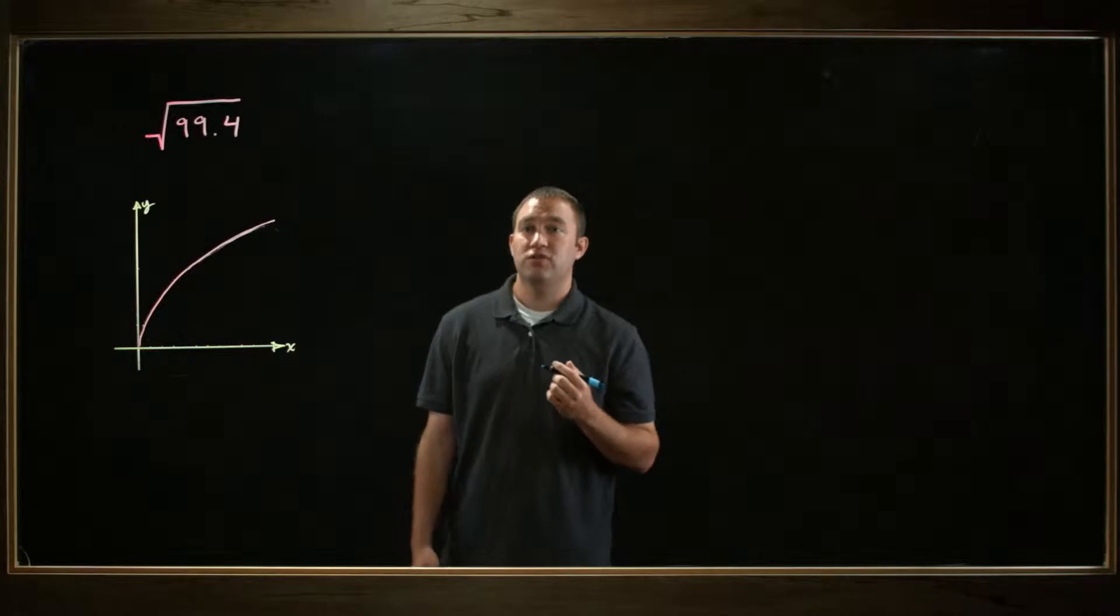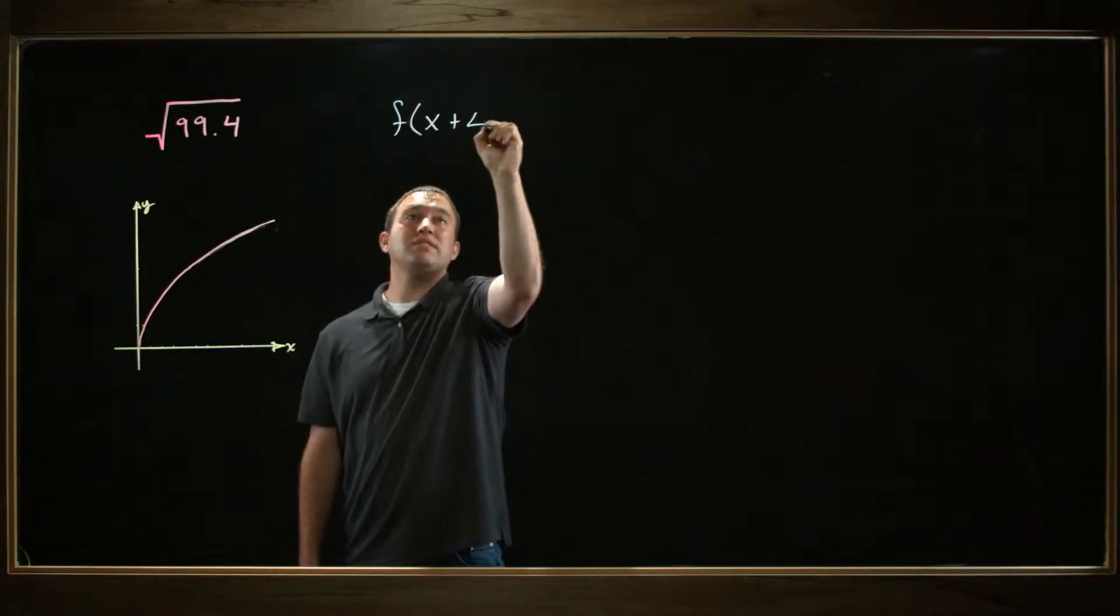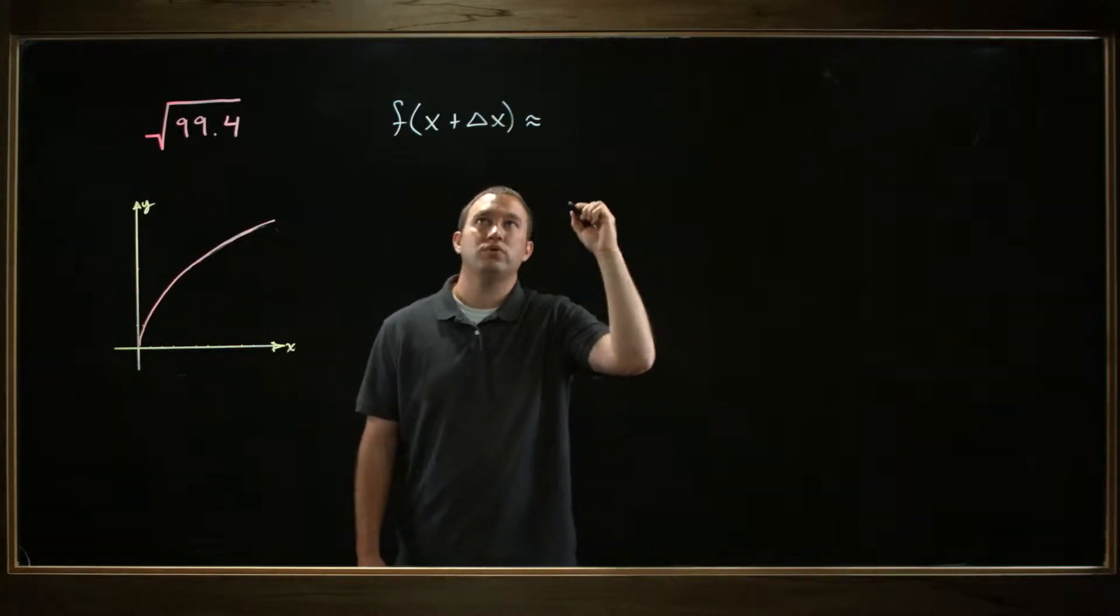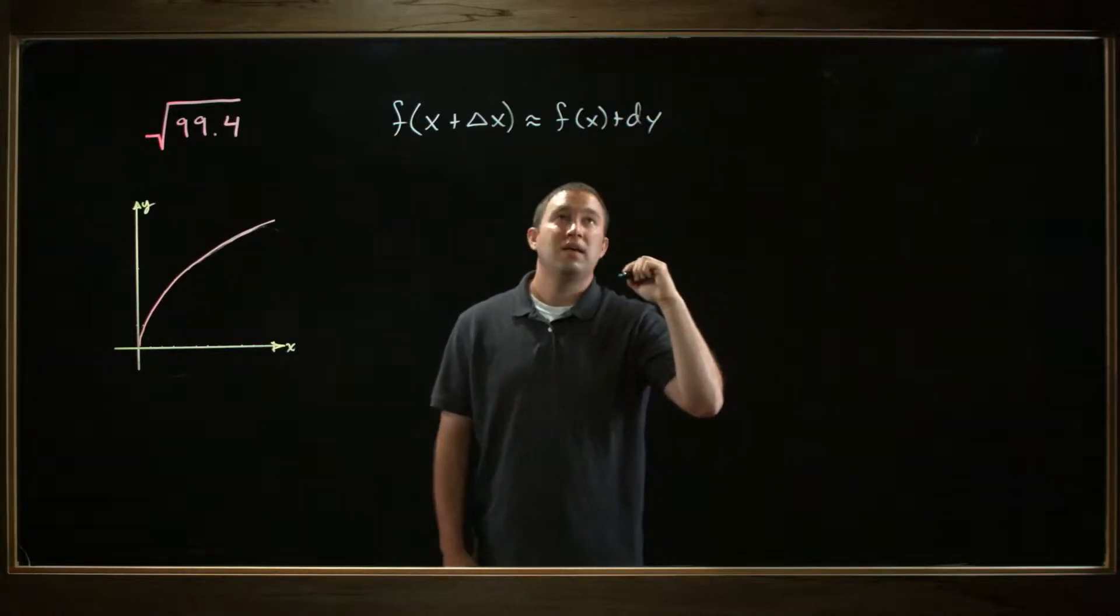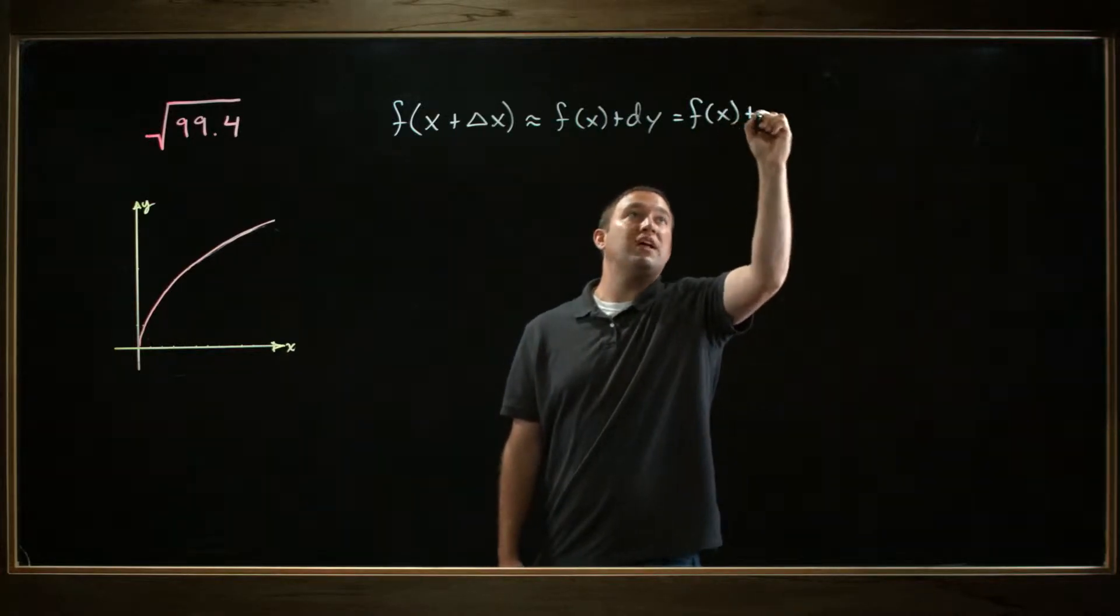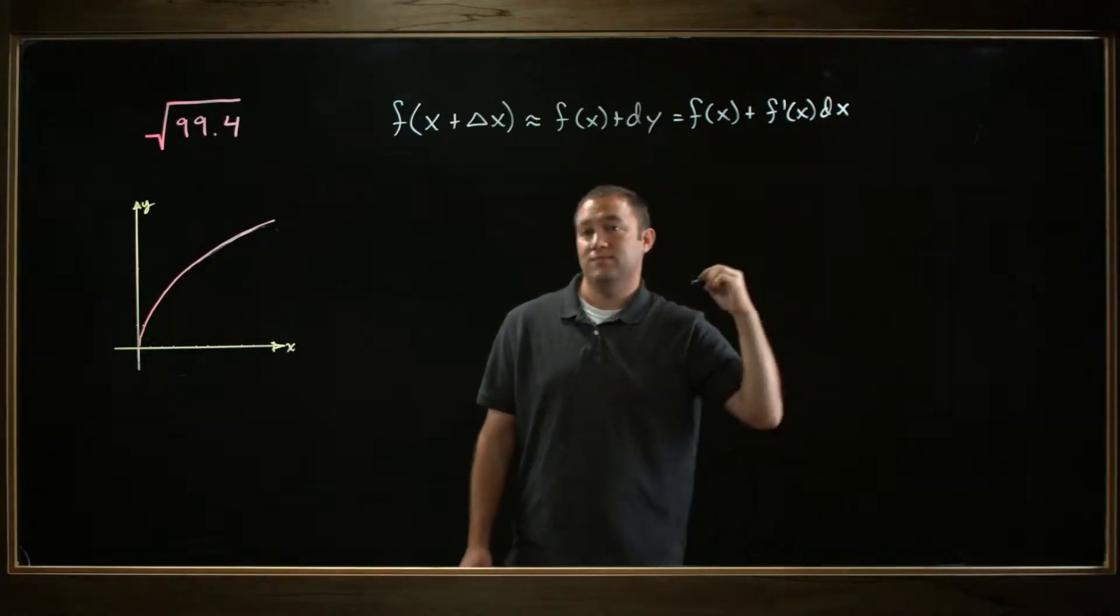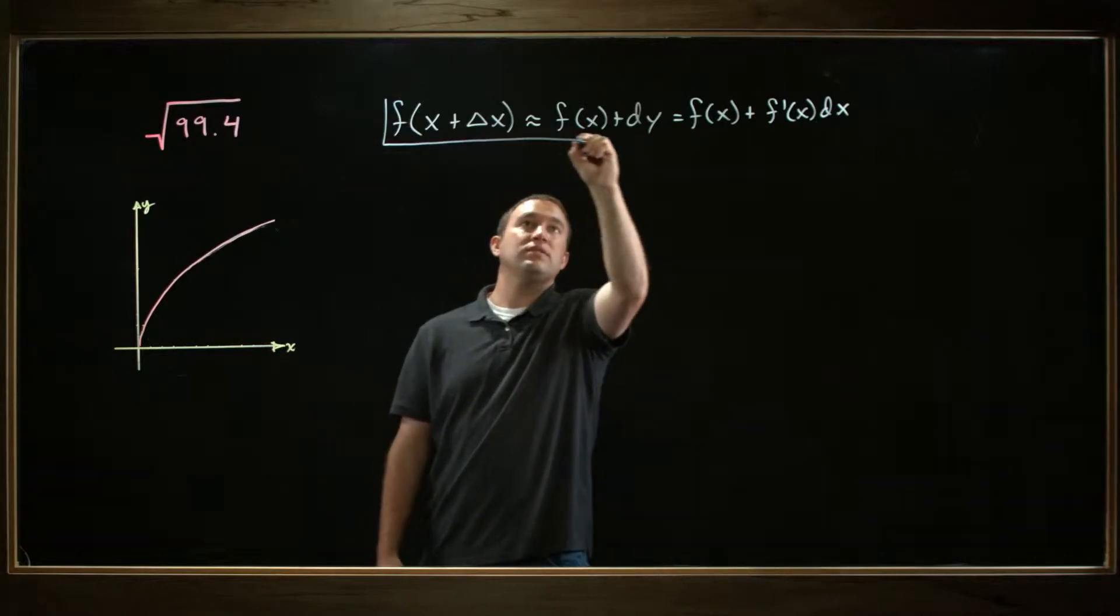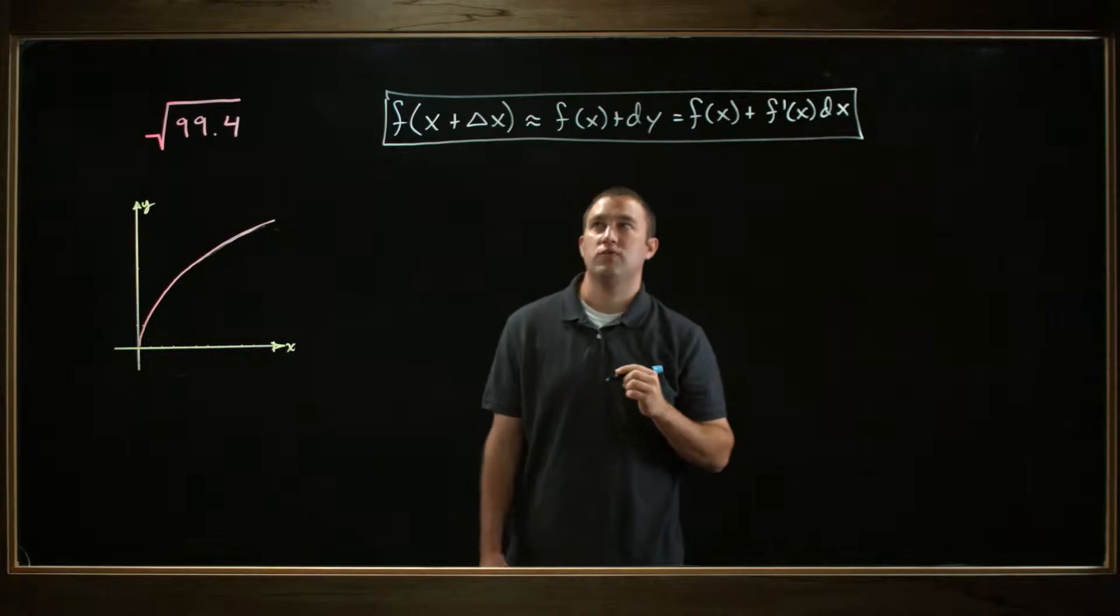If you look in your text, you'll see a formula that looks something like this: f of x plus delta x is approximately equal to f of x plus dy, and then they rewrite dy as f of x plus f prime of x dx. This is a good formula to have memorized when using differentials. But let's explain briefly where this formula comes from.